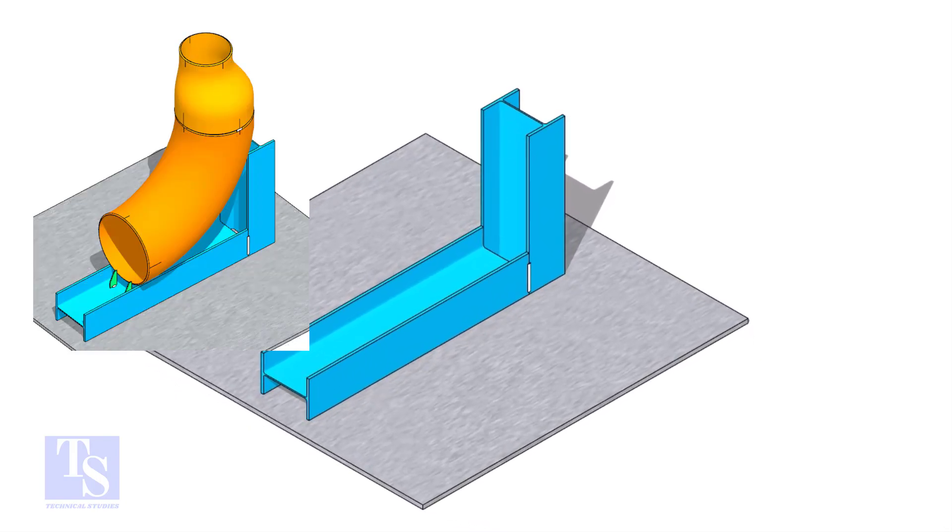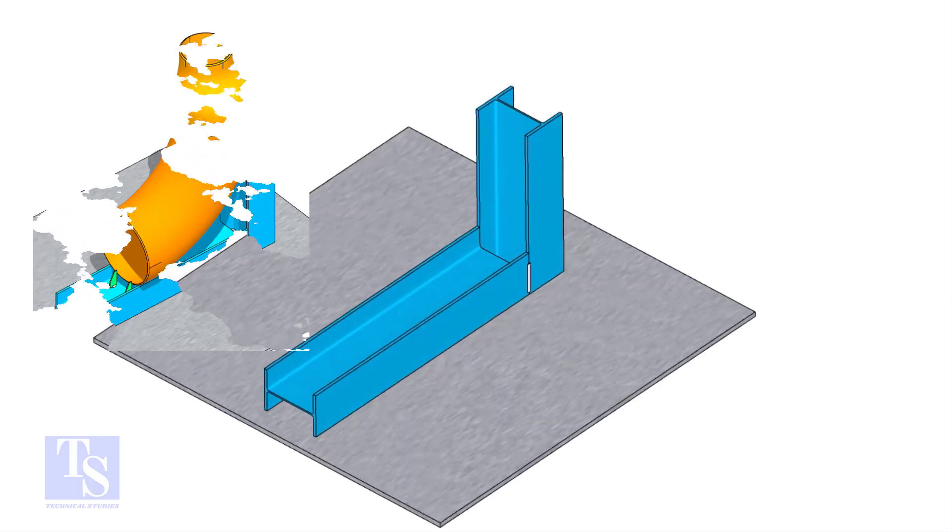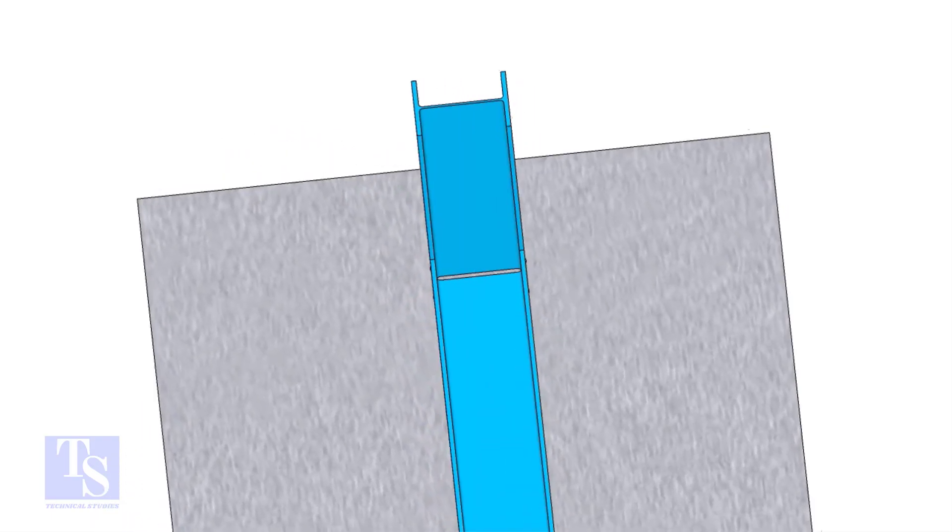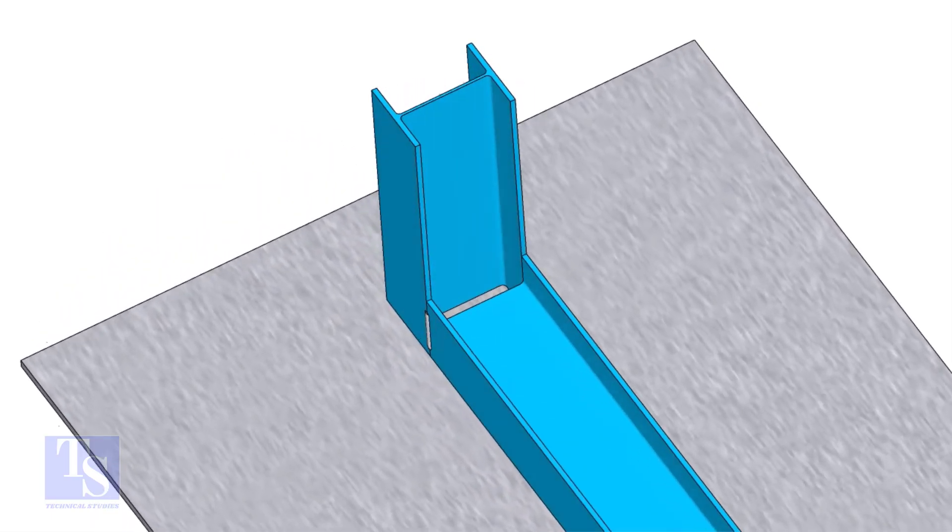First, make an L-shaped stand. You can use ISMB, UB, ISMC, etc. Don't worry about the squareness of the shape. The section shall be smaller than the size of the elbow.